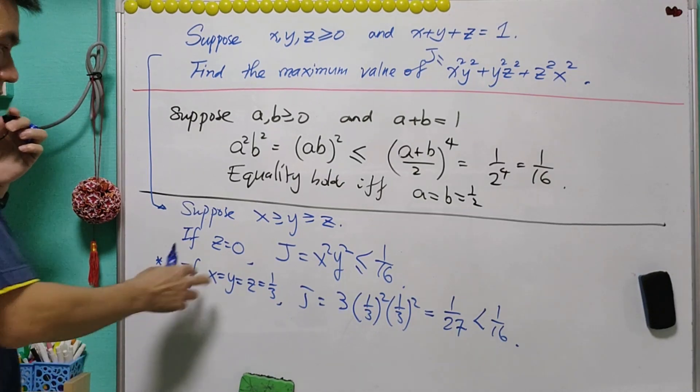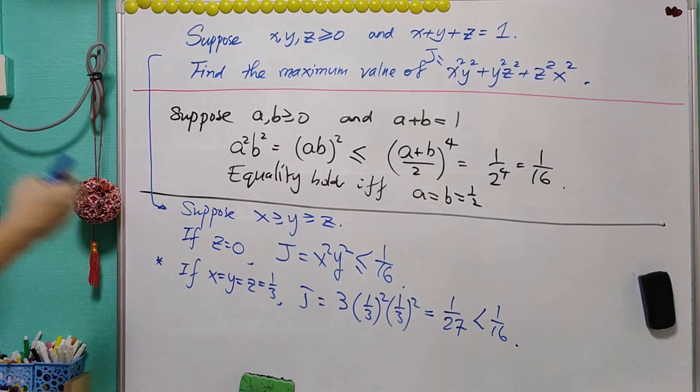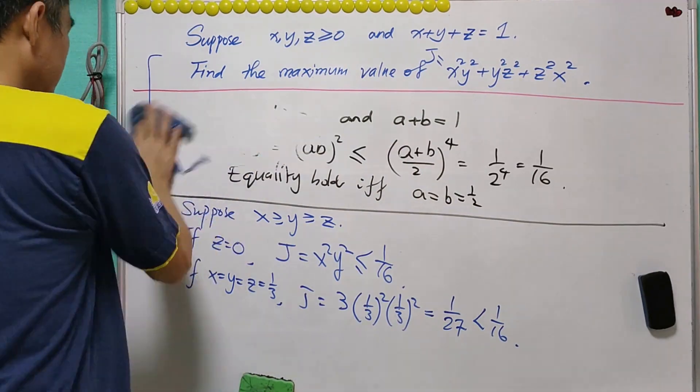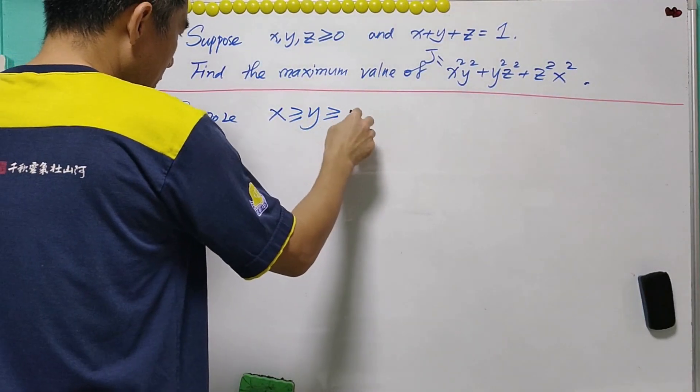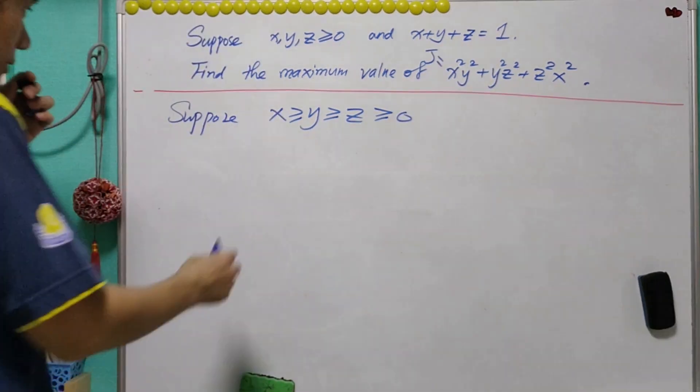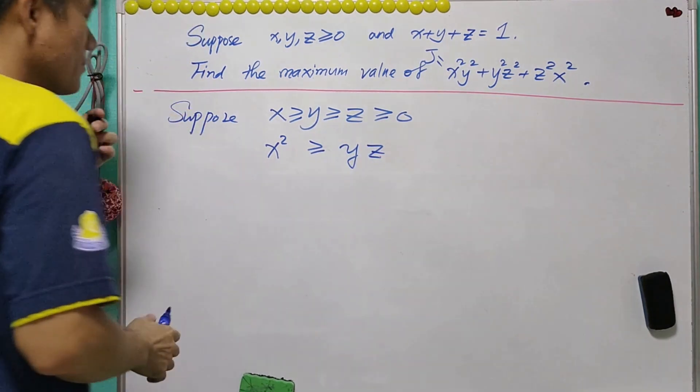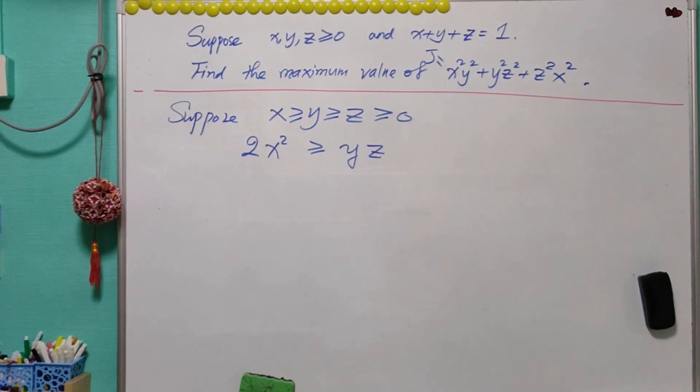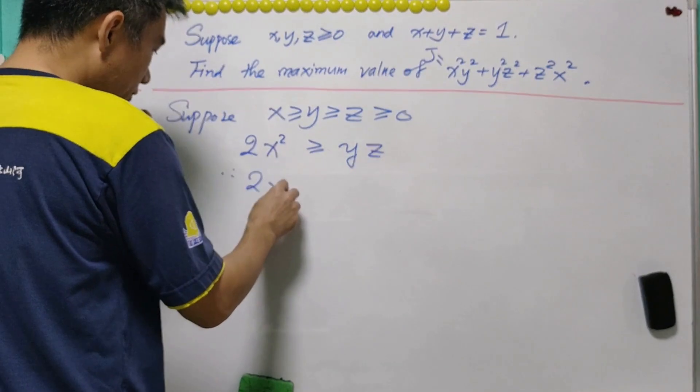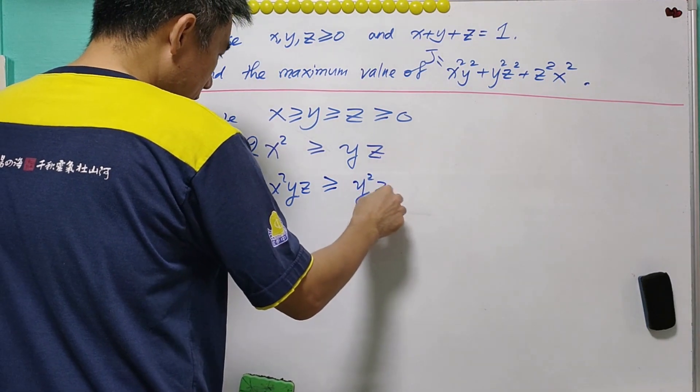Now we show that 1 over 16 indeed is the maximum value. In this case, we suppose that x is greater than or equal to y, and z is the smallest. And therefore, x squared will be greater than or equal to y times z. Not only this, 2x squared must be greater than or equal to y and z. And this means that 2 of x squared, y, z will be greater than or equal to y squared, z squared.